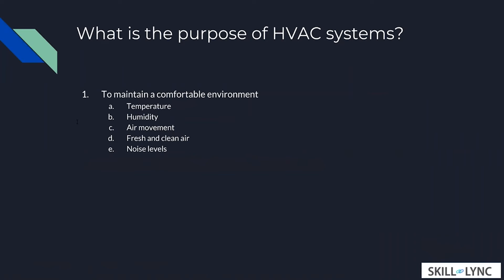Data centers — that's a very good answer. Data centers are places where large computing units are maintained. Companies like Facebook, Google, and Amazon process all their data through these data centers, and thermal management in them is very important. You don't have a lot of human beings walking around; it's mostly machines, and the priority is to make sure those machines operate at a comfortable temperature. In those cases, the HVAC design and optimization objectives are completely different.